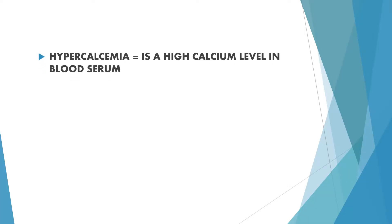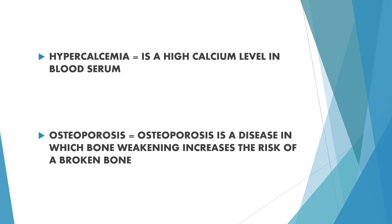Let us see what is hypercalcemia. Hypercalcemia is a high calcium level in blood serum. Osteoporosis is a disease in which bone weakening increases the risk of a broken bone.